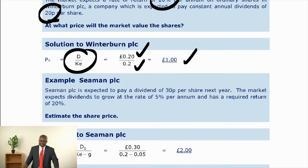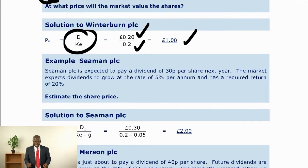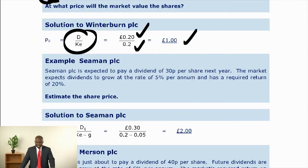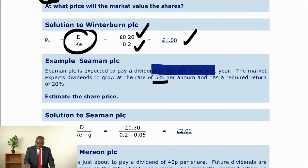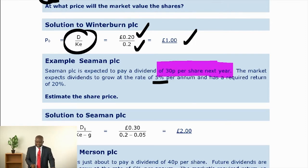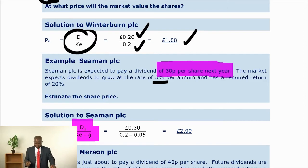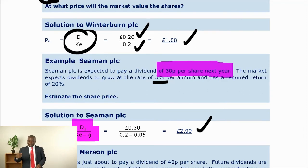Now let's go to Seaman PLC. Seaman PLC is expected to pay a dividend of 30p per share next year. The market expects dividends to grow at 5% per annum and has a required return of 20%. Estimate the share price. Note that the question has already told you the next year's dividend of 30p, so you use D1 / (Ke − g). Don't grow the 30p again because it has already been grown for you. So given 30p next year, cost of equity 20%, and growth rate 5%, this gives you the market price. This market price excludes the current dividend because it is the present value of future dividends — it is the ex-div price. When we're doing cost of capital, the market price we need is the ex-div. So if you need the cum-div, you take the ex-div and add back the dividend.